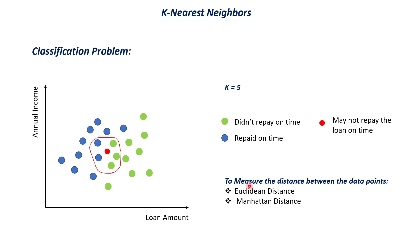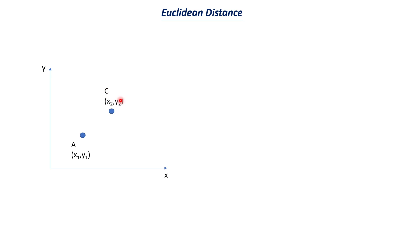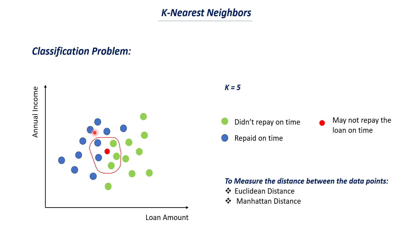The main job is to assign the k value and find the Euclidean distance. Let's take an example and see how we can find the distance between two data points. We have an x-axis and y-axis with two data points. The first data point is named A with coordinates X1 comma Y1, where X1 is the x-axis coordinate and Y1 is the y-axis coordinate. The second point is C with coordinates X2 and Y2. We want to find the distance between them, named D.